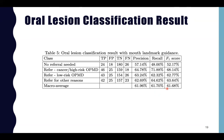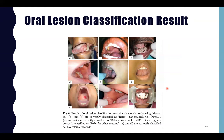With mouth landmark guidance, the F1 score for each referral decision class in terms of precision and recall improves significantly. The qualitative results from the classification model with mouth landmark guidance are consistent with clinicians, where images A, B, and C are correctly classified as refer for cancer and high-risk OPMD.